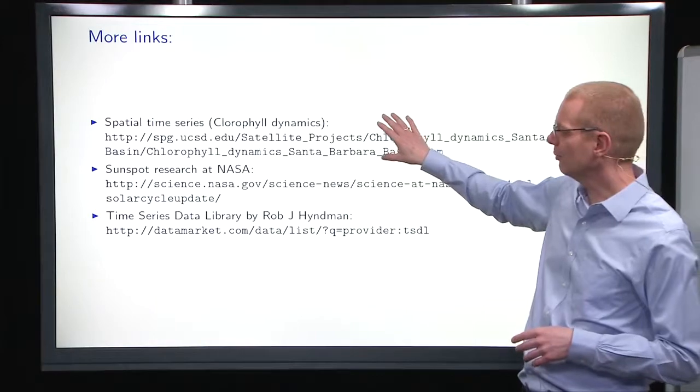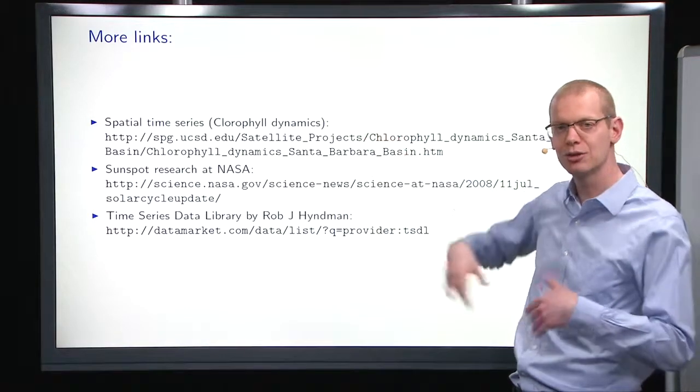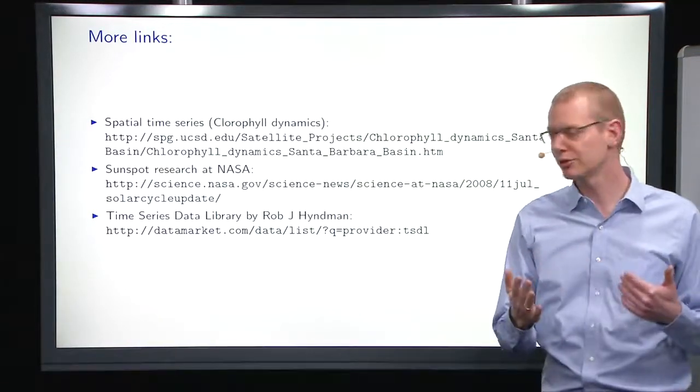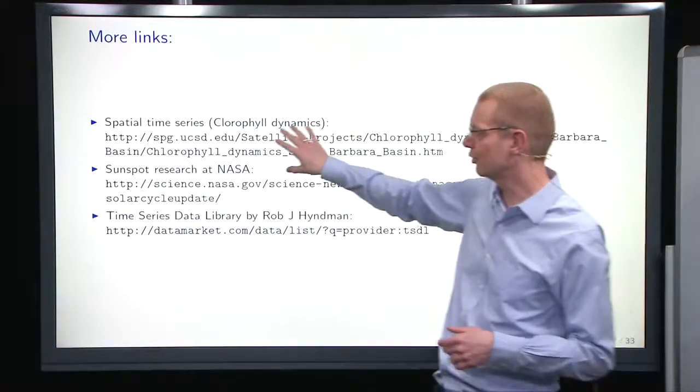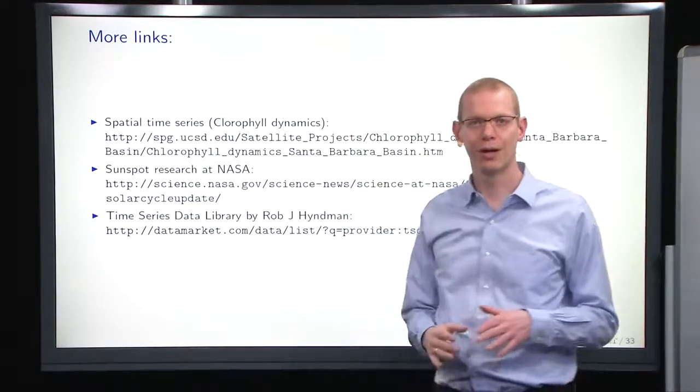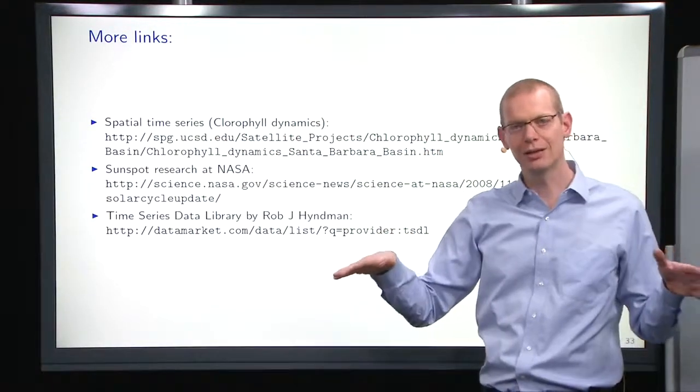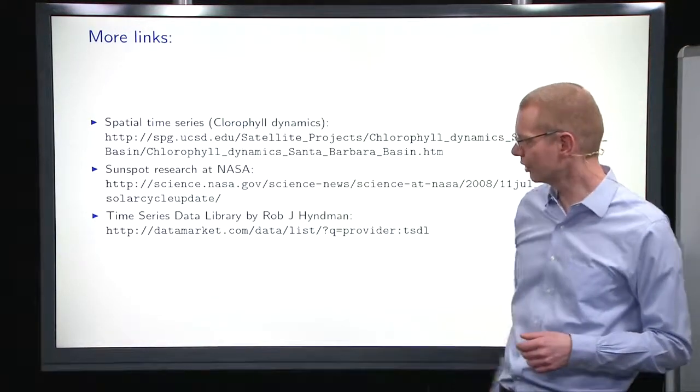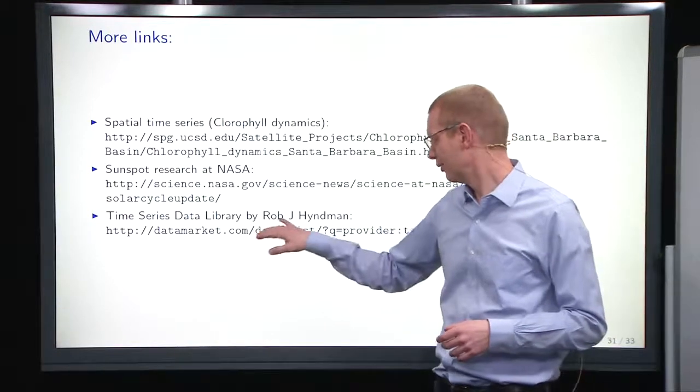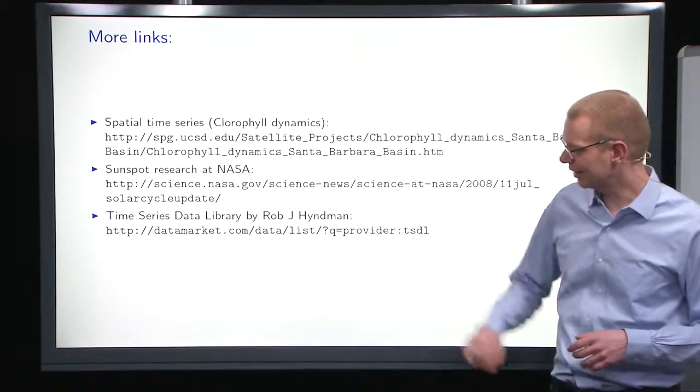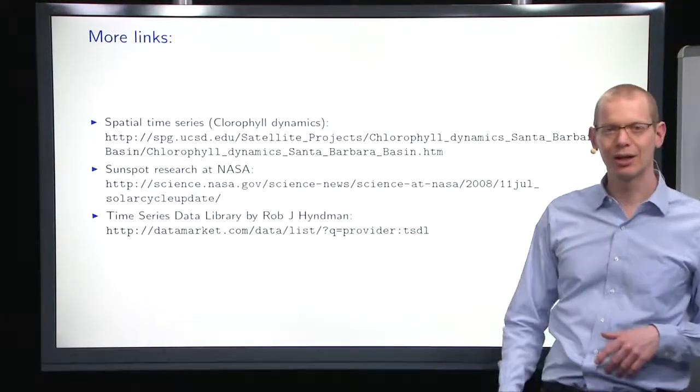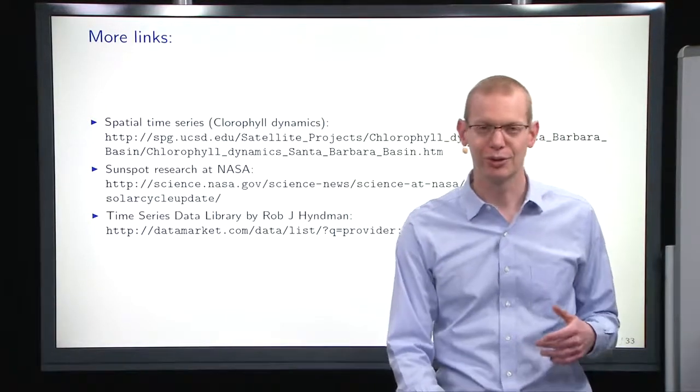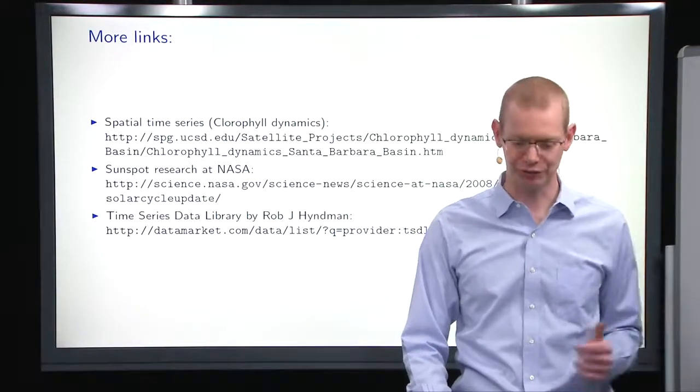But there's many other things that you can look at than just cointegration and continuous time processes. You also have spatial time series, where the spatial domain gives an extra correlation structure. You have to keep track of sunspots. And Rob Hyndman has a data library here with a lot of different examples that you can look at if you have time and are interested in that.